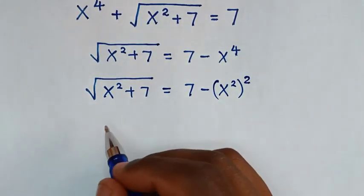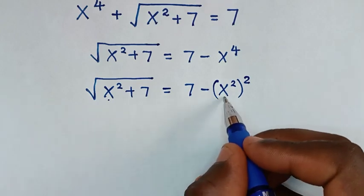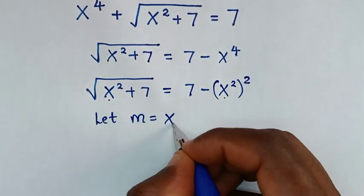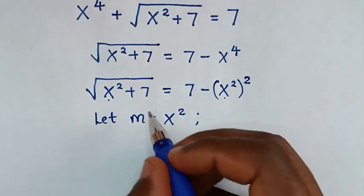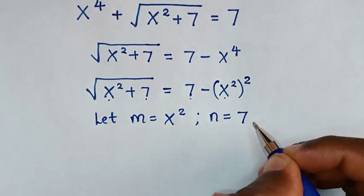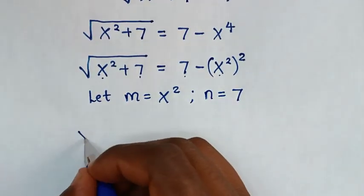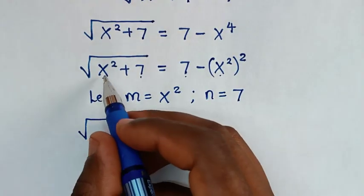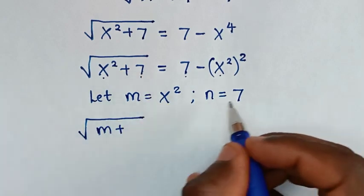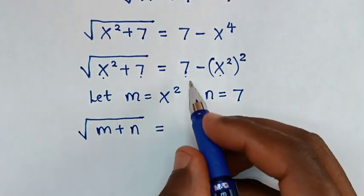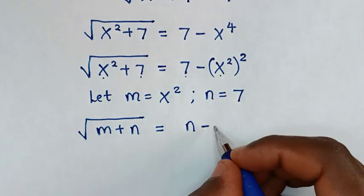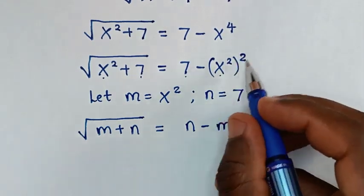From here we can see x squared is common, so let m equal x squared. Also 7 is common, so let n equal 7. Substituting: square root of m plus n is equal to n minus m squared.